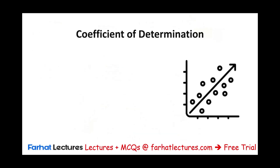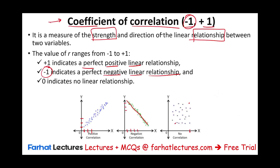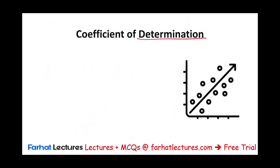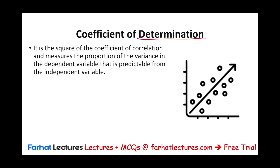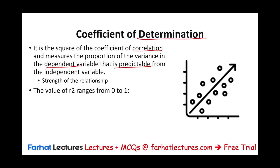We also need to be familiar with the coefficient of determination. You have to differentiate between the coefficient of correlation — how correlated they are — and the coefficient of determination. The coefficient of determination is the square of the coefficient of correlation and measures the proportion of the variance in the dependent variable that is predictable from the independent variable. It measures the strength of the relationship — specifically, how much of it can be explained. This is called R-squared.